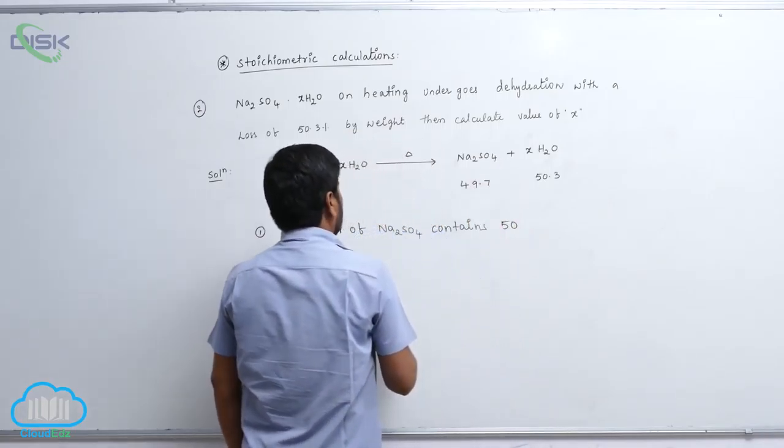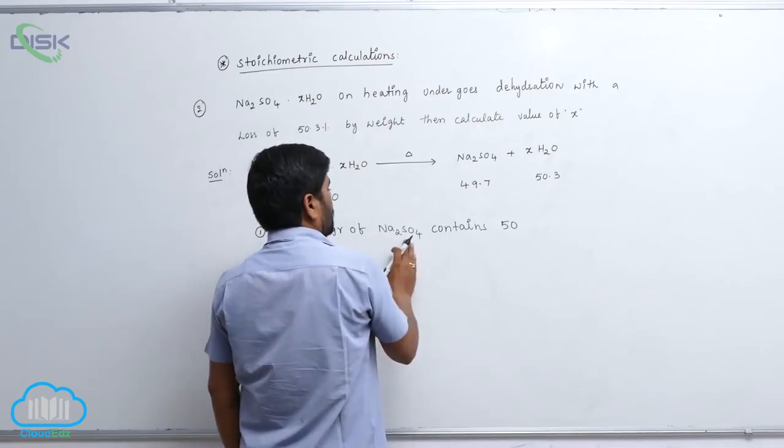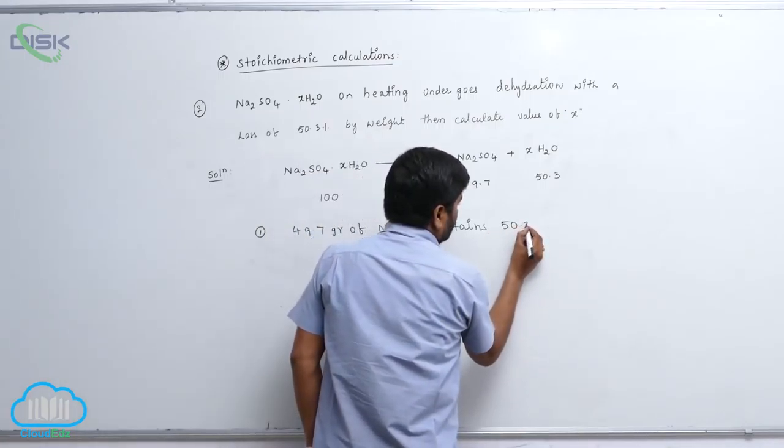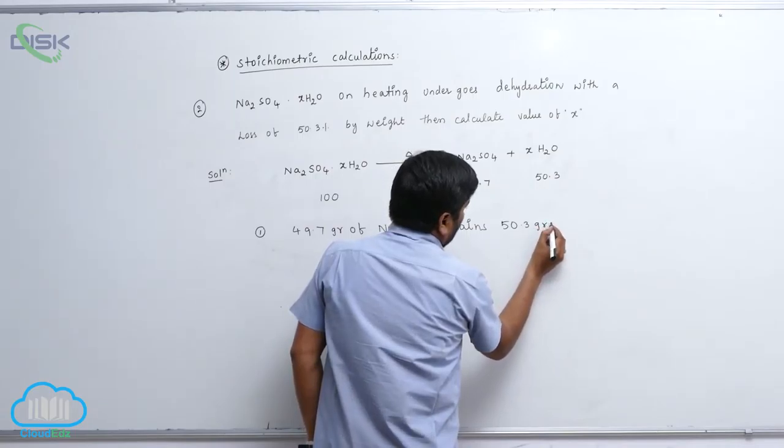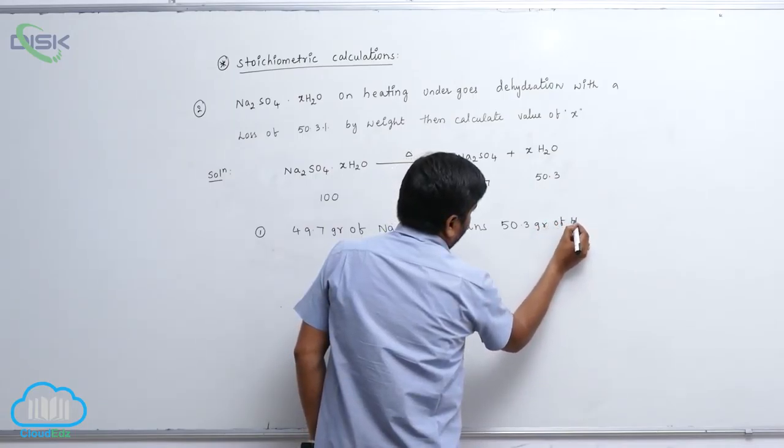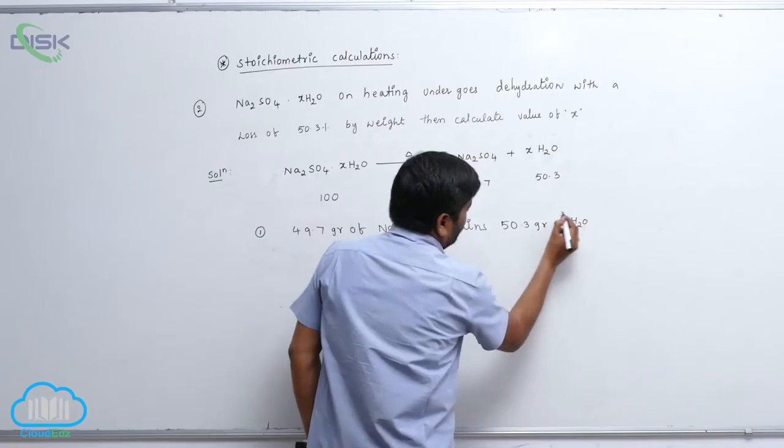49.7 grams of sodium sulfate contains 50.3 grams of water.